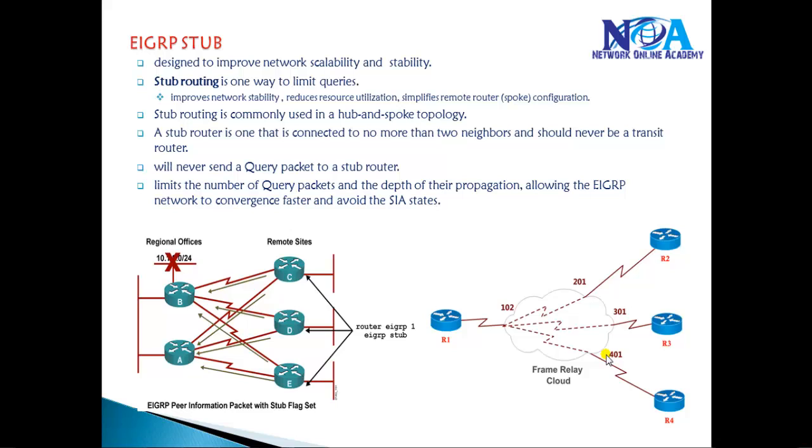In this video we'll talk about EIGRP stubs. EIGRP stubs is totally different from OSPF stubs, and the main reason of using EIGRP stubs is to limit the number of queries on the end locations, which is more applicable in hub and spoke topology.